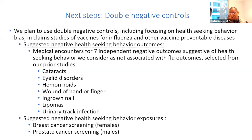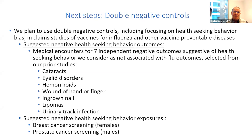As next steps, we propose to use double negative controls. We plan to use double negative controls focusing on health-seeking behavior biases in claims studies of vaccines for influenza and other vaccine-preventable diseases. We suggest starting with the seven negative health-seeking behavior outcomes we defined in the influenza study. We also suggest the use of negative health-seeking behavior exposures to produce the pairs of negative outcomes and exposures—in this case, breast cancer screening for females and prostate cancer screening for males.